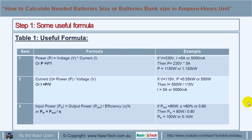Step 1: Some useful formulas. The first formula is: Power equals Voltage multiplied by Current. For example, if you have a voltage of 230 volts and a current rating of 5 amps (5000 milliamps), the power for this electrical device will be 1.15 kilowatts.